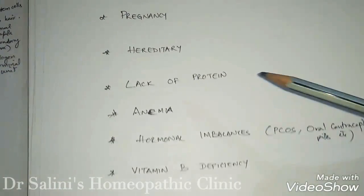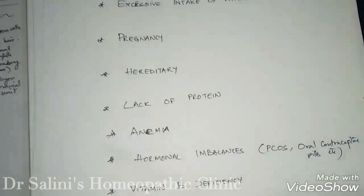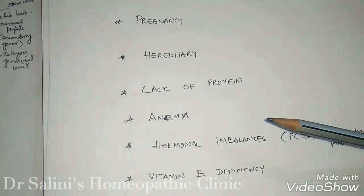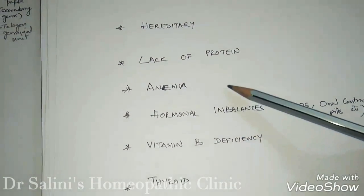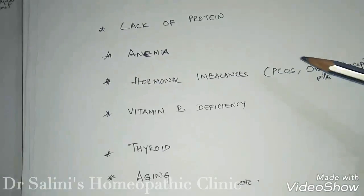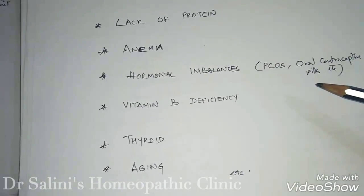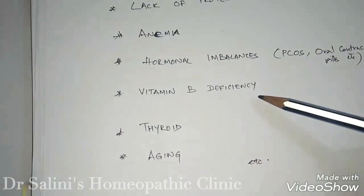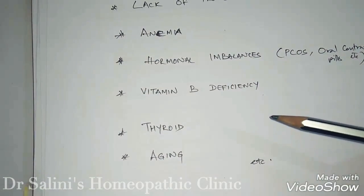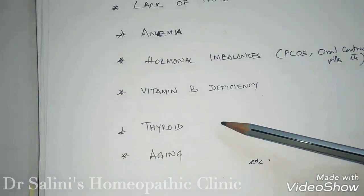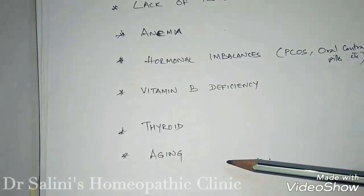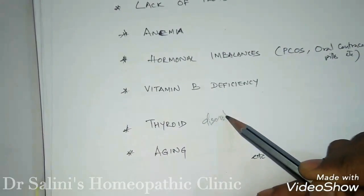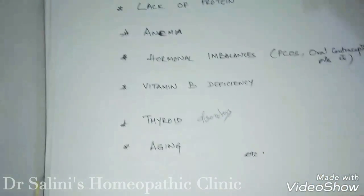Hereditary factors, lack of protein — because hair is made up of keratin, which is a protein, so lack of protein leads to hair fall — anemia, hormonal imbalances like PCOS, oral contraceptive pills, vitamin B deficiency, thyroid disorders, and aging are among the few factors mentioned.